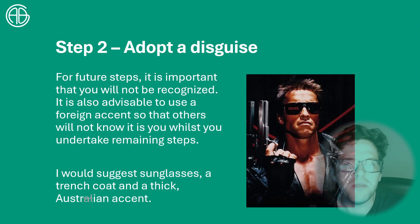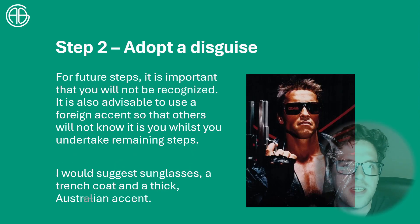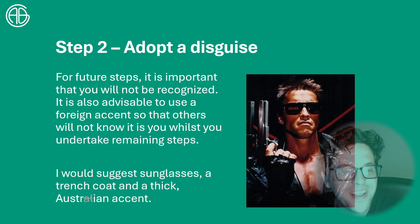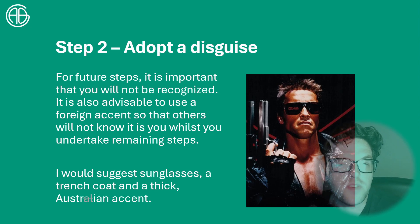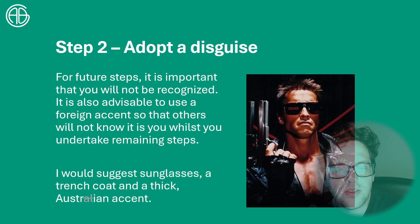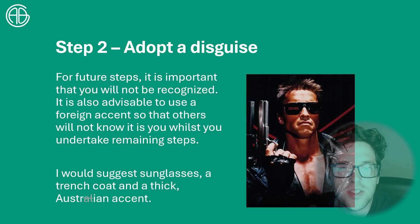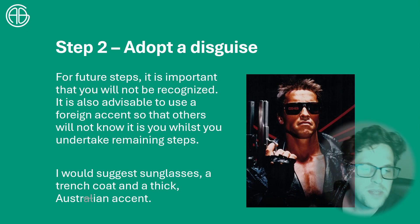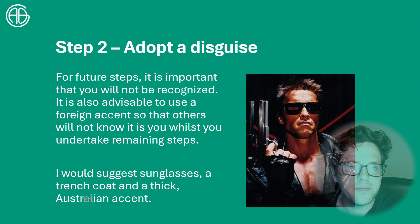Step two is very important. You're going to have to adopt a disguise, because what you're doing next is going to make sure you're not recognized by anyone. It's also advisable to use a foreign accent so others won't know it's you when they encounter you. I'd suggest adopting something like sunglasses, a trench coat, and potentially a thick Austrian accent.